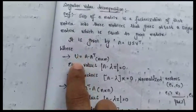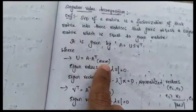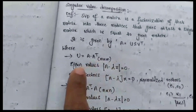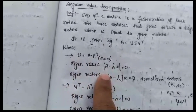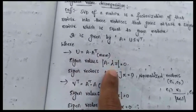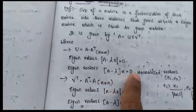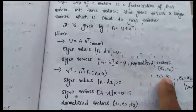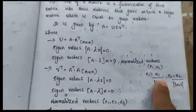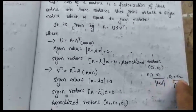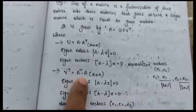The important formulas we have to use are: U equals A times Aᵀ, which is an m×m matrix. We find the eigenvalues and eigenvectors using the formulas: det(A − λI) = 0, and (A − λI)x = 0. Then find the normalized vectors e1 = x1 / |x1| and e2 = x2 / |x2|.